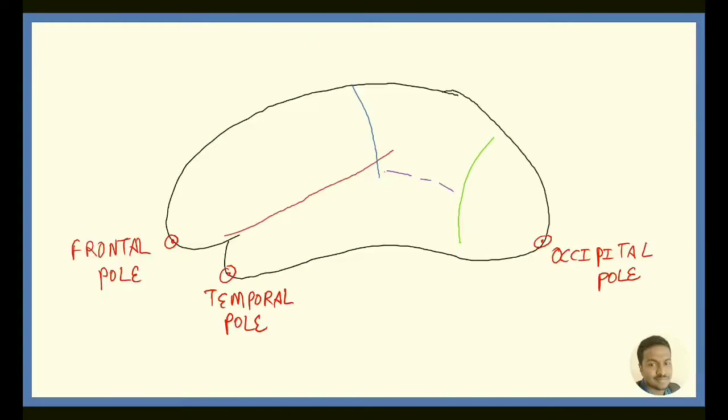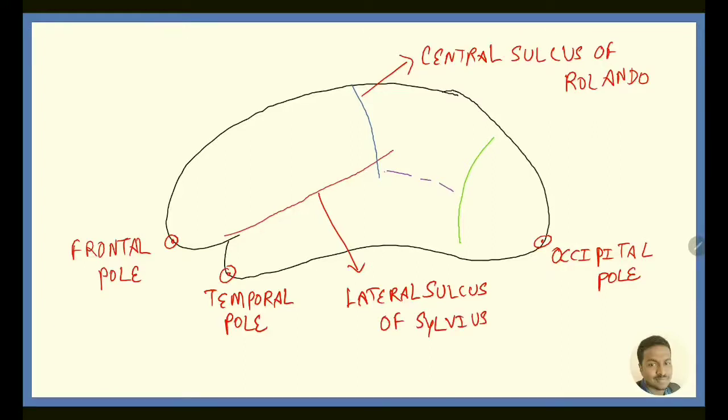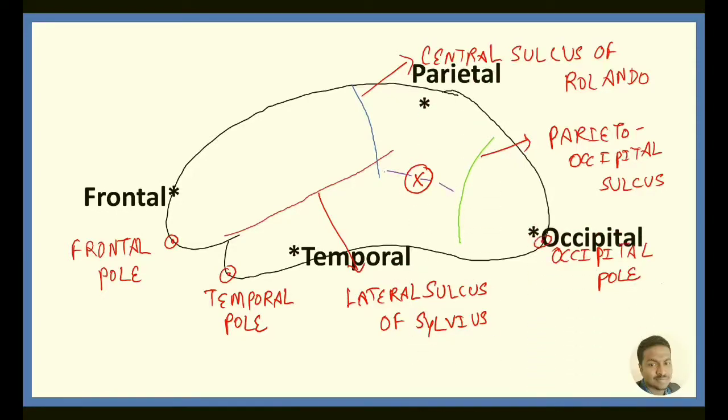Now, we are going to divide this brain into some lobes. For that, we'll take this central sulcus of Rolando. This is the lateral sulcus of Silvius and this is parieto-occipital sulcus. This is the imaginary line connecting the central sulcus to the parieto-occipital sulcus thereby limiting the parietal lobe from the temporal lobe. Now, we have the frontal lobe, temporal lobe, parietal lobe and occipital lobe.